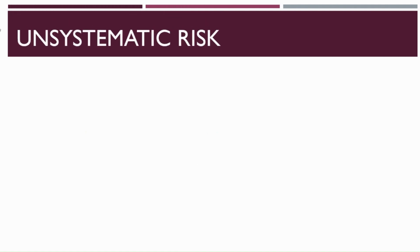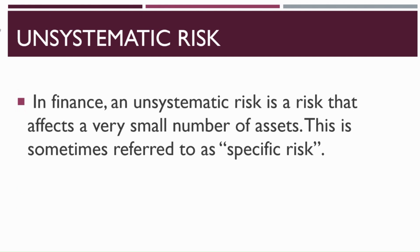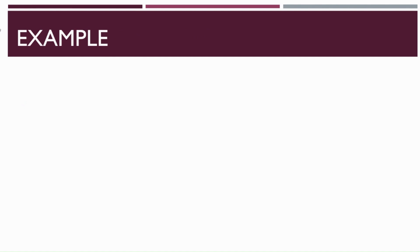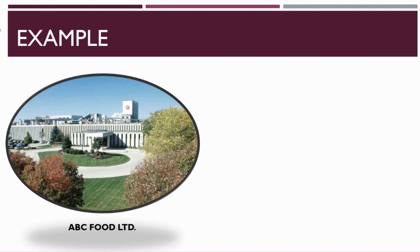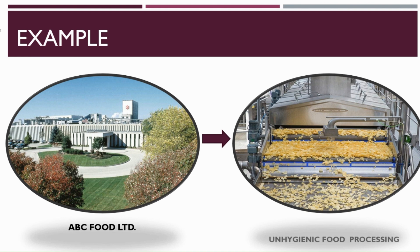Unsystematic risk is a risk that affects a very small number of assets and is sometimes referred to as specific risk. For example, ABC Food Limited was doing well until carelessness of the management affected the whole company. Due to carelessness towards hygiene, the food started affecting customers negatively. This is an example of unsystematic risk, as it impacted ABC Food Limited and not the whole food industry.